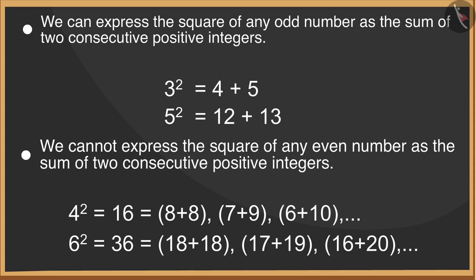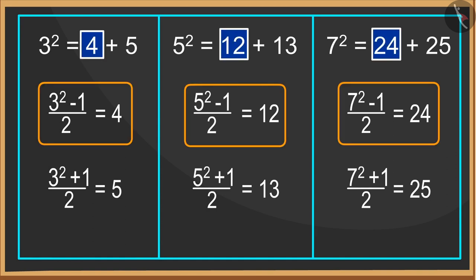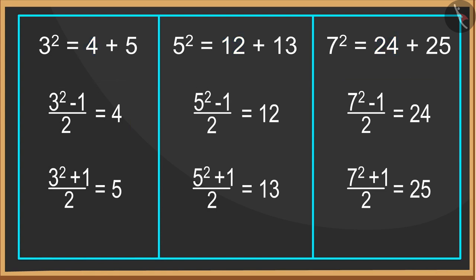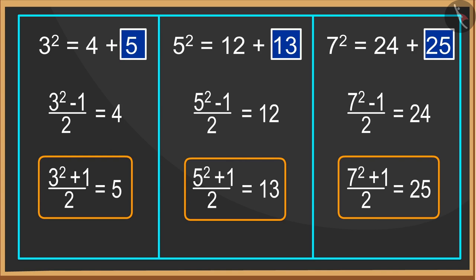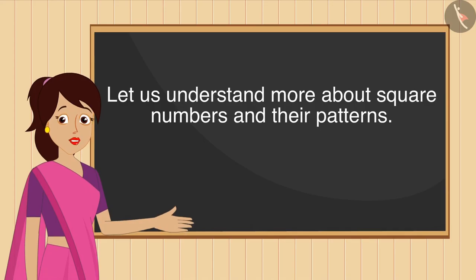If you pay attention, you will notice that the first consecutive number is obtained by subtracting one from the square number and dividing by two. The second number is obtained by adding one to the square number and then dividing the sum by two. Come on, let's understand more about square numbers and their patterns.